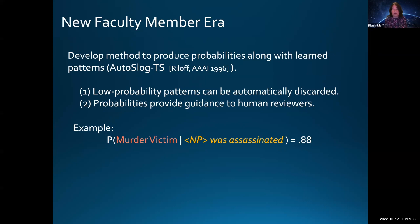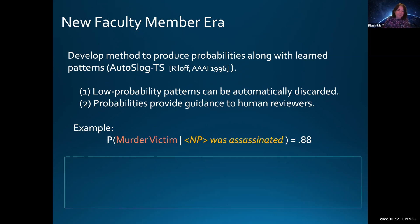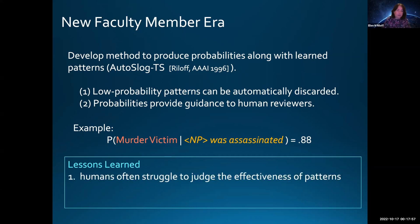The moral of this story is that humans definitely struggle to judge the effectiveness of patterns and rules when seen in isolation. That's where statistics, probabilities, and feedback from a large set of text can be extremely helpful. There's a synergy between rules, patterns, and probabilistic methods.